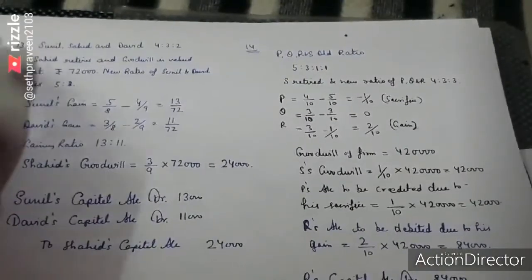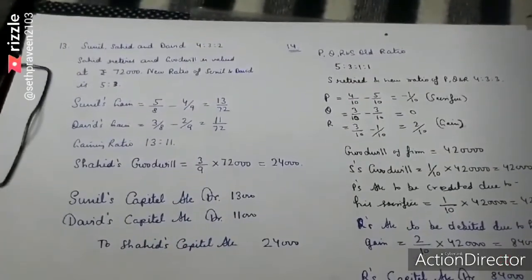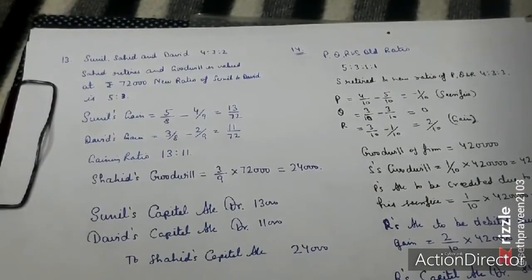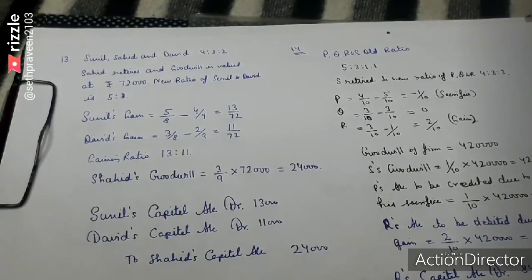Question 13: First I will tell you about treatment of goodwill in retirement, and then I will discuss question 13 in the next video. What we do is the retiring partner gets his share from goodwill, and then we pass the adjustment entry in the gaining ratio of remaining partners.